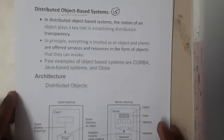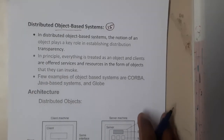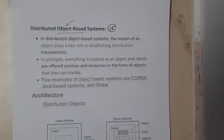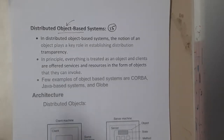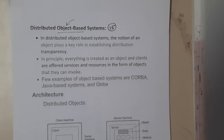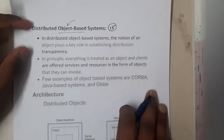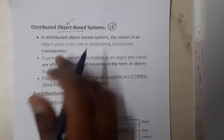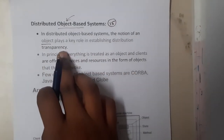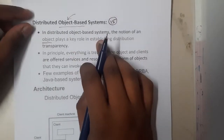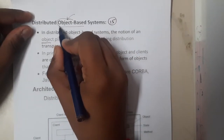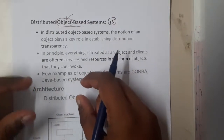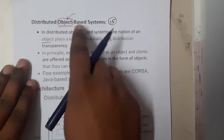So first of all, what is this distributed object-based system? From the name only you can say there is a concept of object here. In a distributed object-based system, the object which you created in your code with the help of a class — using that object you will be connecting to the server, getting data, and all those things. That is the reason why it is called a distributed object-based system.